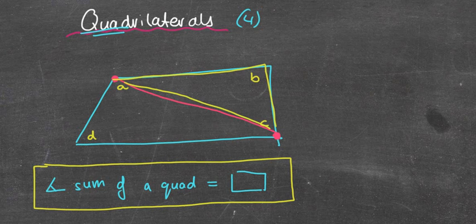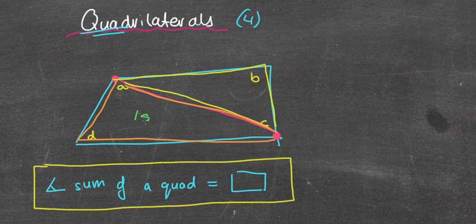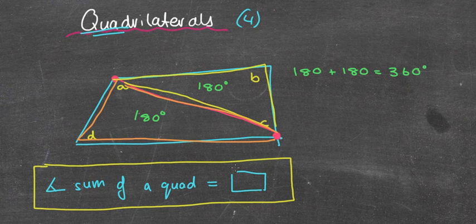And what I've actually done is broken it up into two triangles — a triangle up there and a triangle down the bottom. Why? Well, we've just learned that the angle sum of a triangle is 180 degrees. So that means this bottom triangle has an angle sum of 180, and this top triangle has an angle sum of 180. So if I add those two together, because that's what the quadrilateral is, we get the magical number of 360 degrees. So the angle sum of a quadrilateral is 360 degrees, all the time.